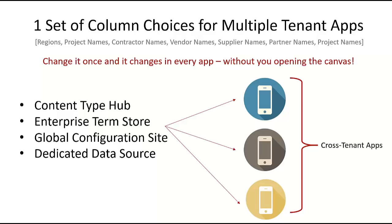Think about when you're using columns that have choices — no matter what those choice types are, you very often will use that same choice list many times. You don't want to actually go to the list and click the plus sign and create these types of columns every time you make an app. Here are some examples. Regions — most companies have a preset list of regions they use all the time, so you definitely wouldn't want to create that column over and over again.